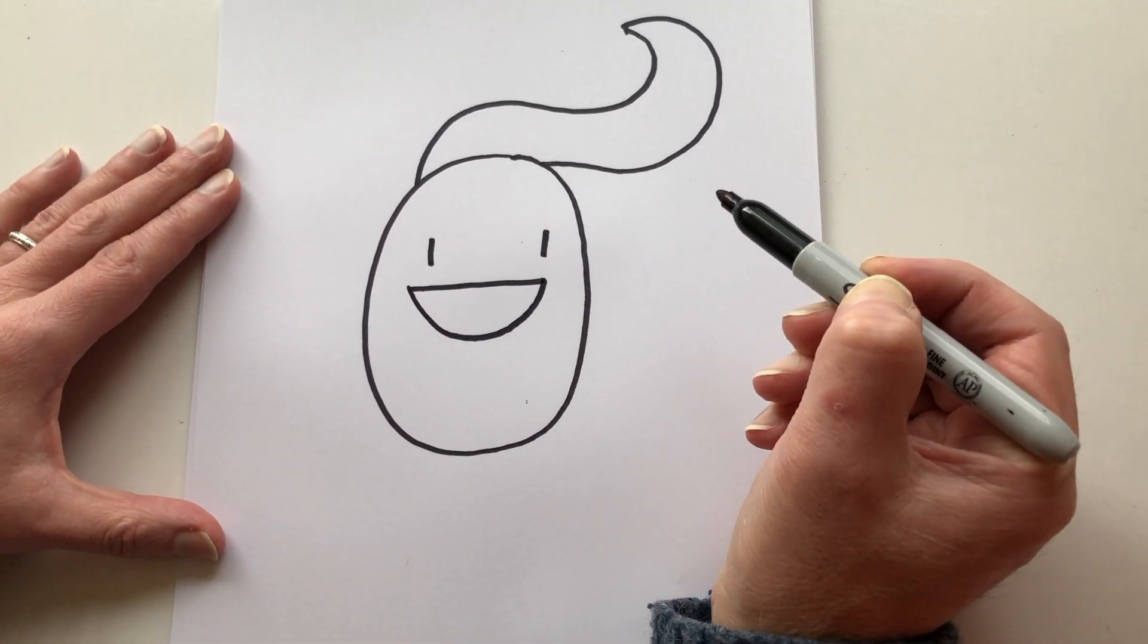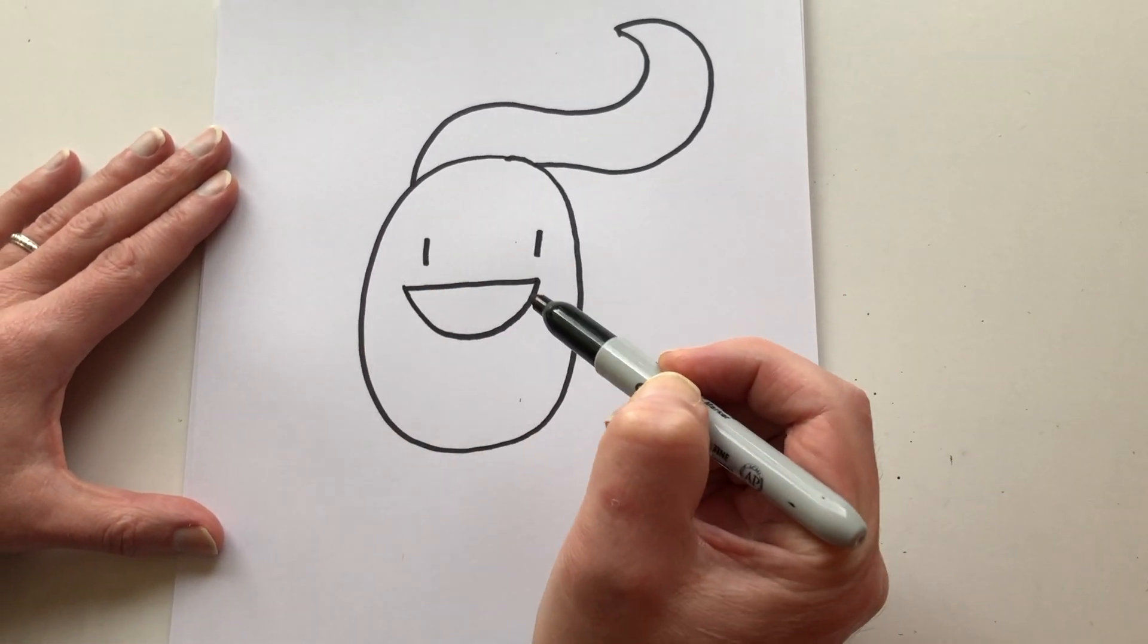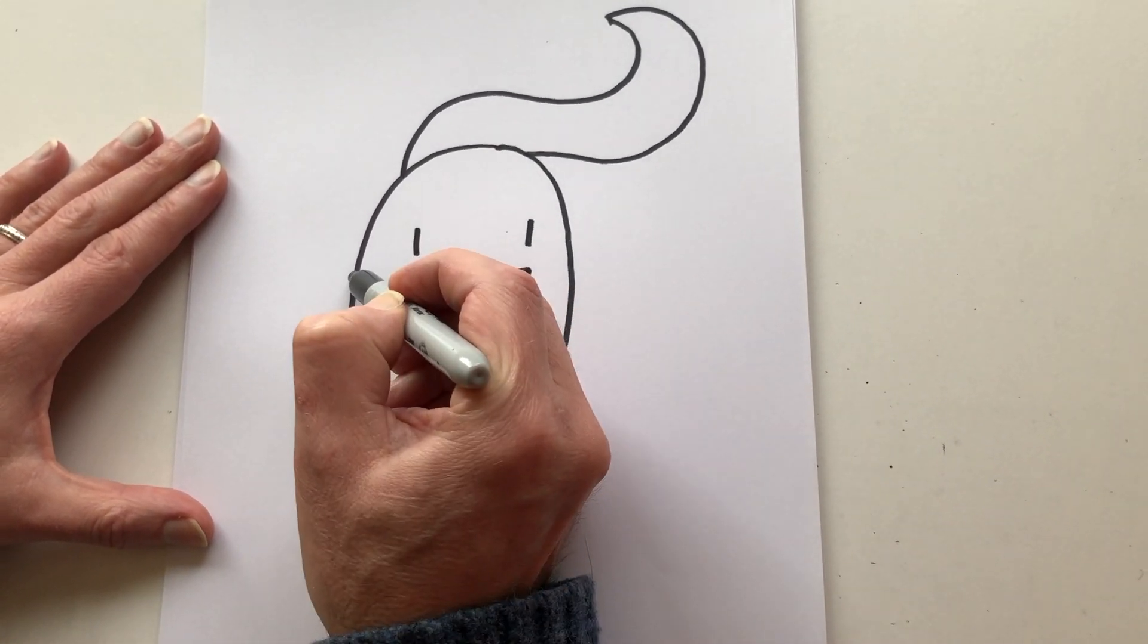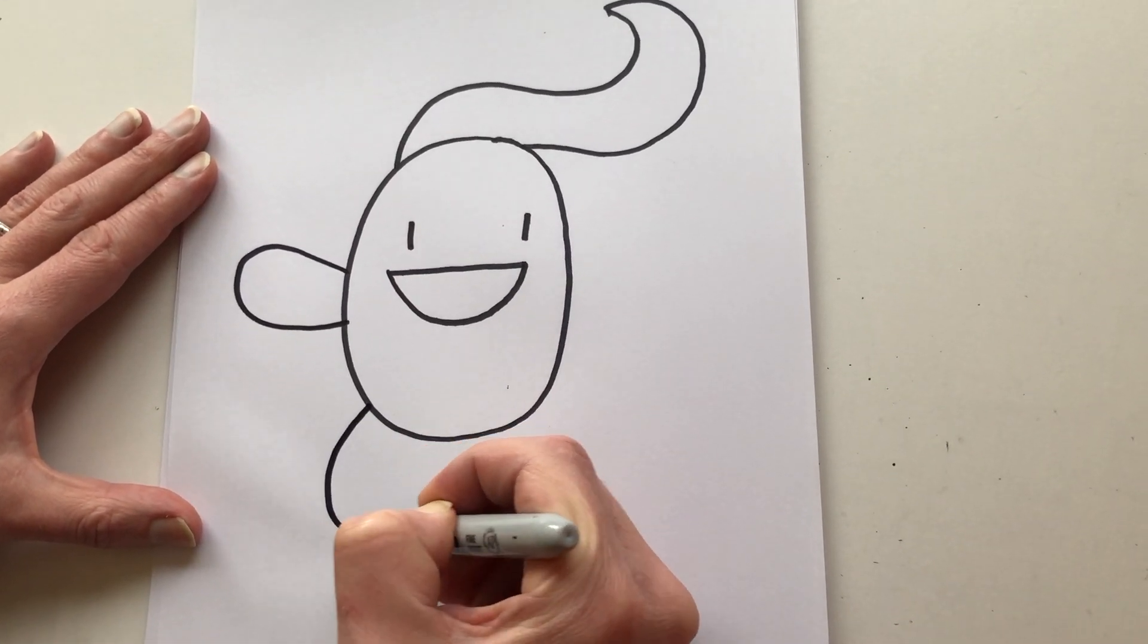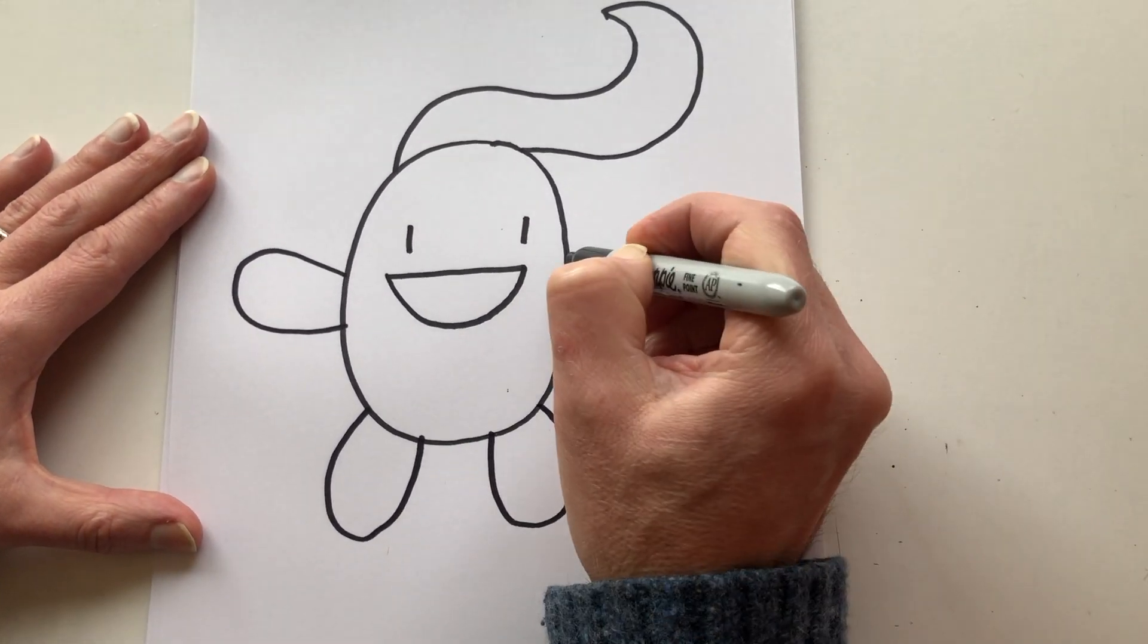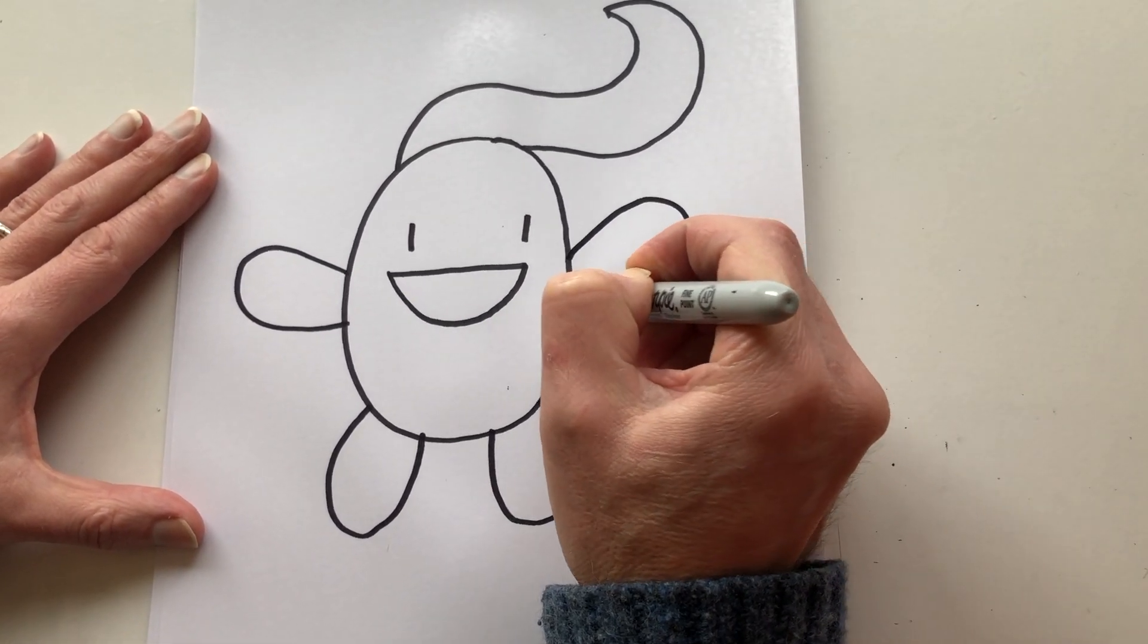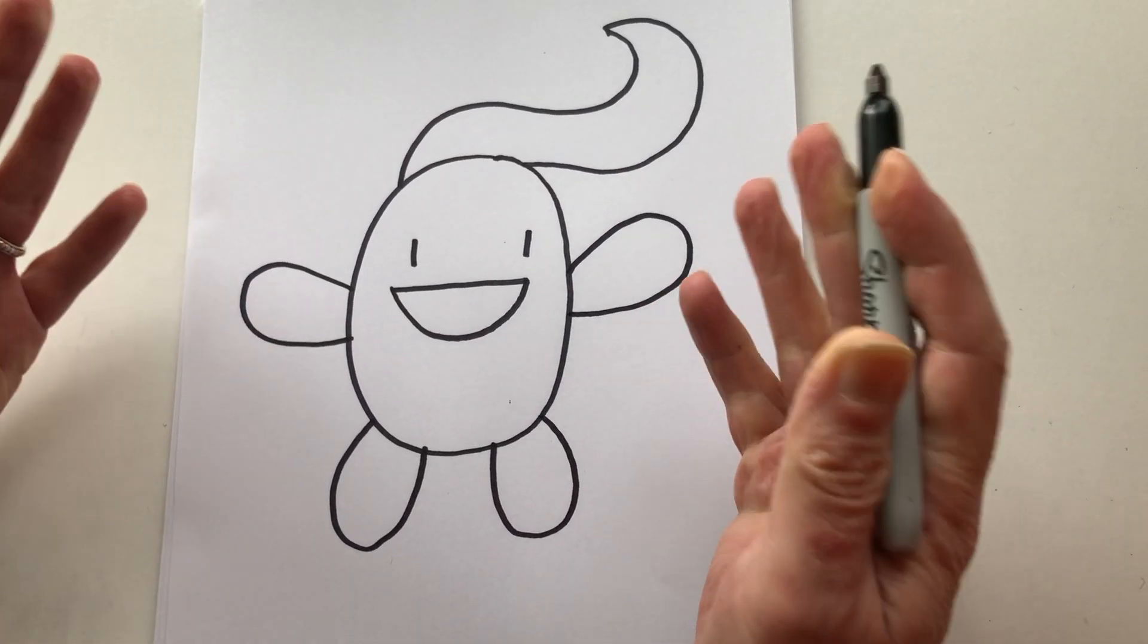And then his arms and legs are all basically the same shape. Very easy. You just go... Boop. Boop. Boop. Boop. And that's how you draw Johnny Boo the easy way. It's so easy.